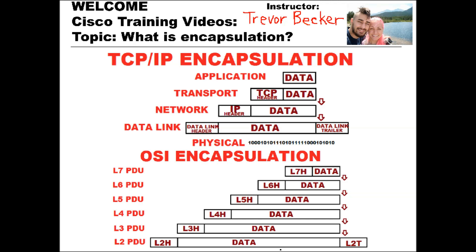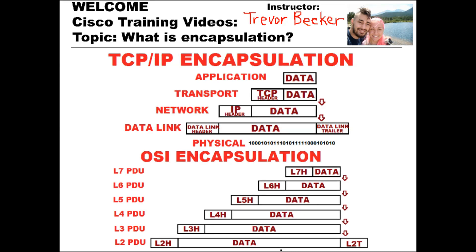As data is communicating over a network, each layer needs a place to document its specific information in. This location is referred to as a header. A header is informational data that's appended in front of the application data as it's being processed. Also, depending on the layer, a trailer is added as well. The contents of a trailer are commonly an FCS or some sort of data integrity check. This layered process of adding headers and trailers around data is referred to as encapsulation.